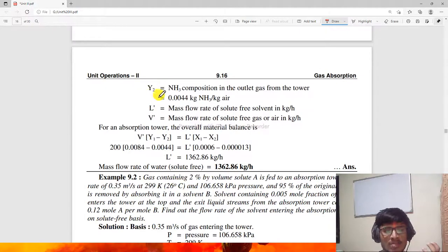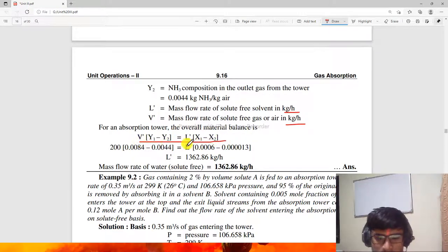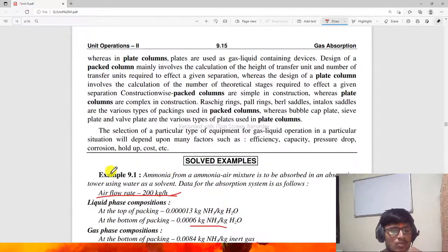Use the formula for absorption tower overall material balance: V' times (Y1 minus Y2) equals L' times (X1 minus X2). V' is the mass of solute-free gas in kg per hour, which is 200. Solving this equation gives us L' equals 1362.86 kg per hour. So the amount of water, which was solute-free, is the answer. This was very easy.